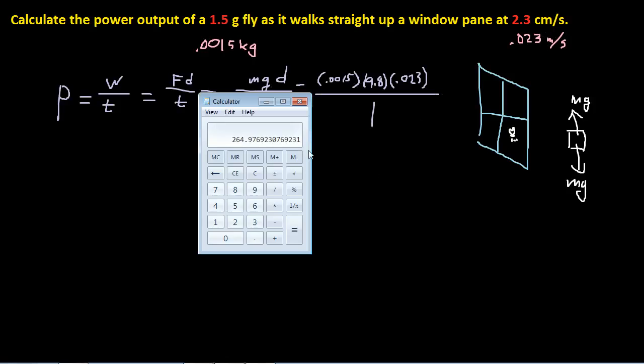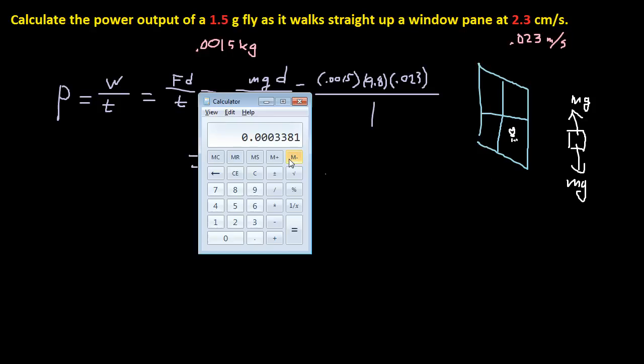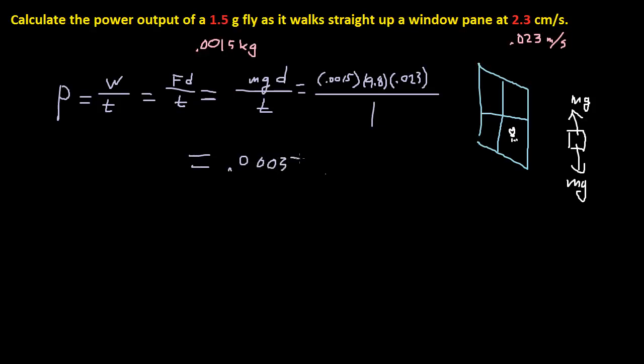And then let's just use our calculator to figure out our little value for this. So 0.0015 times 9.8 times 0.023. And that is equal to 0.0003381. So that is equal to 0.0003381. So 338.